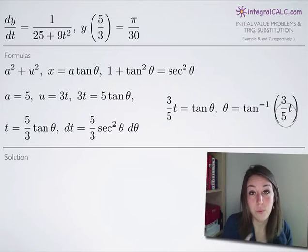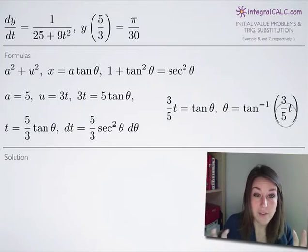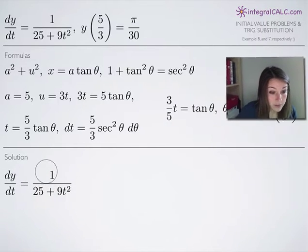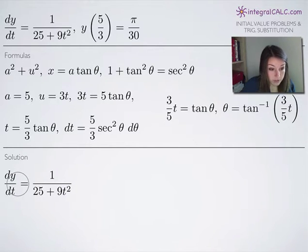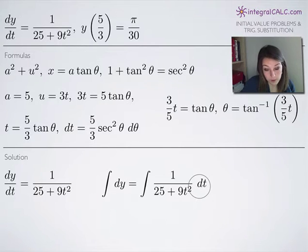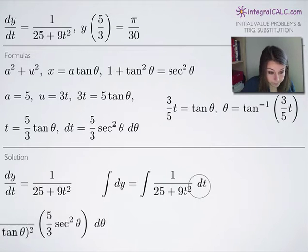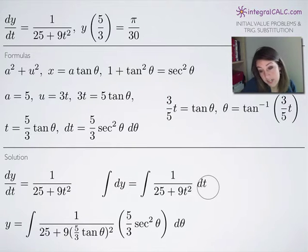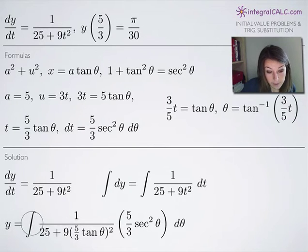That's all the prep work for a trigonometric substitution problem. Now we can start solving. I've rewritten the problem as dy/dt, and the first thing we do is multiply both sides by dt and integrate. The left-hand side integral of dy simply becomes y. The right-hand side integral we tackle with trigonometric substitution.